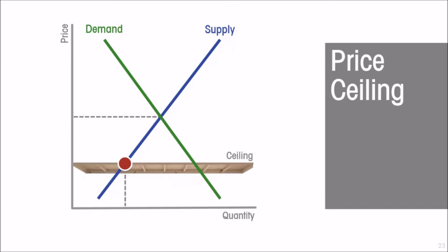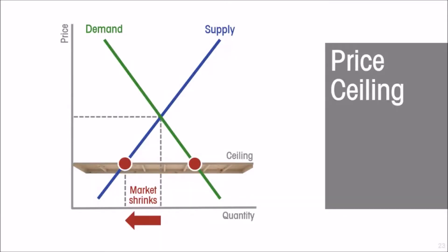A binding price ceiling means that quantity supplied is going to be less than quantity demanded, and the market will be characterized by excess demand. What is not supplied cannot be bought, so the lesser side of the market will prevail. The amount traded has to be the lesser of the quantity being supplied and being demanded, so the quantity traded in the market shrinks.